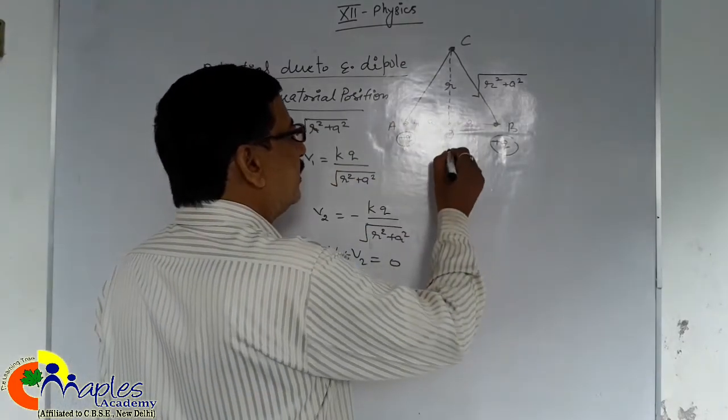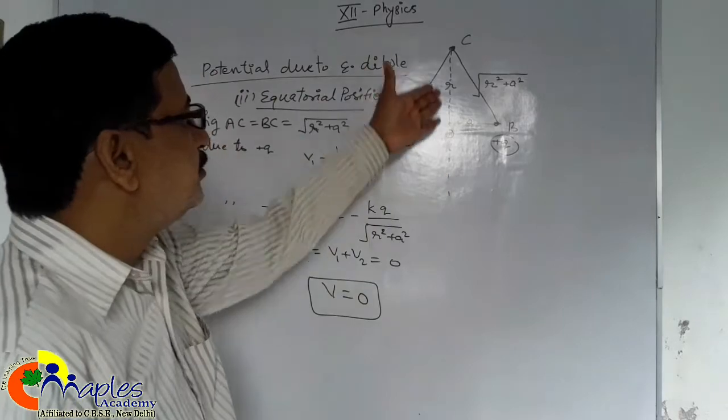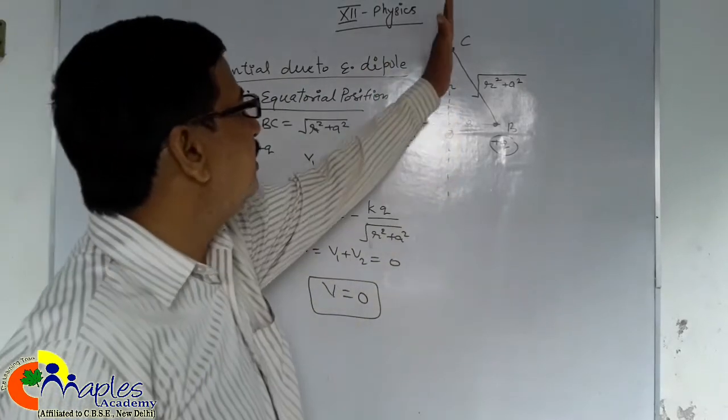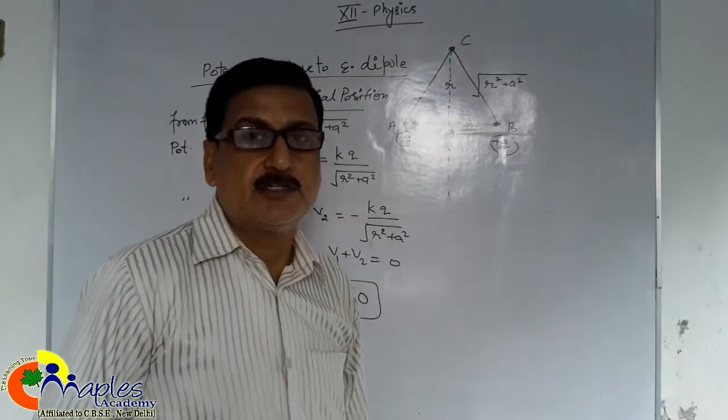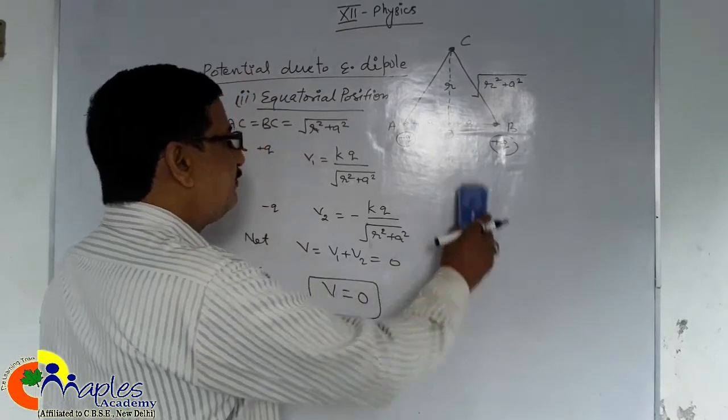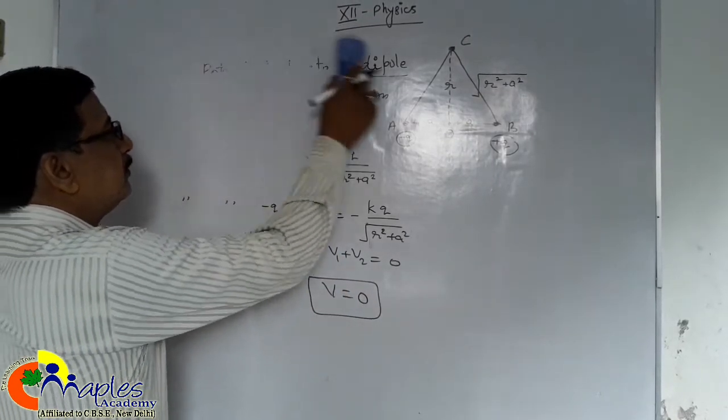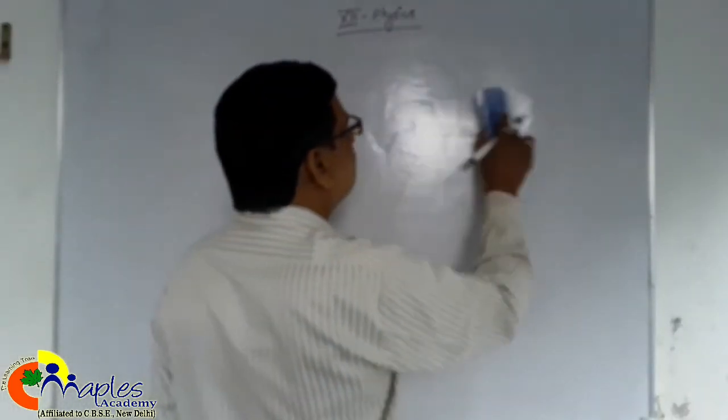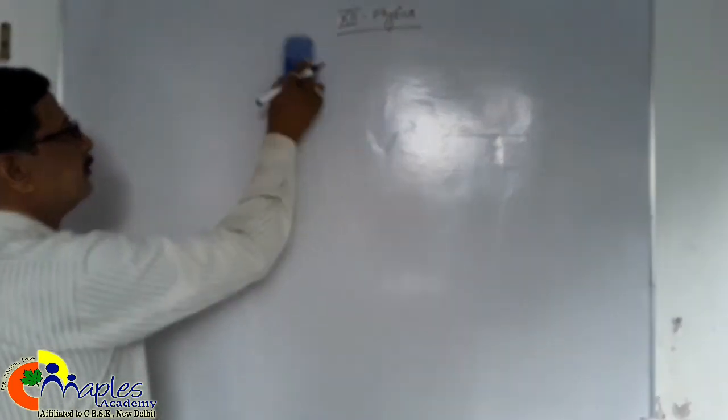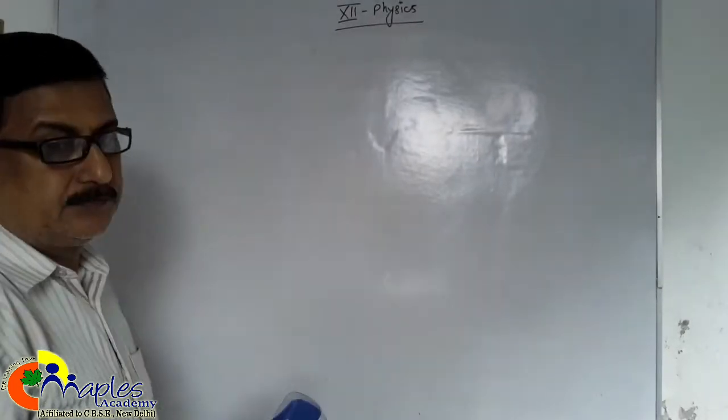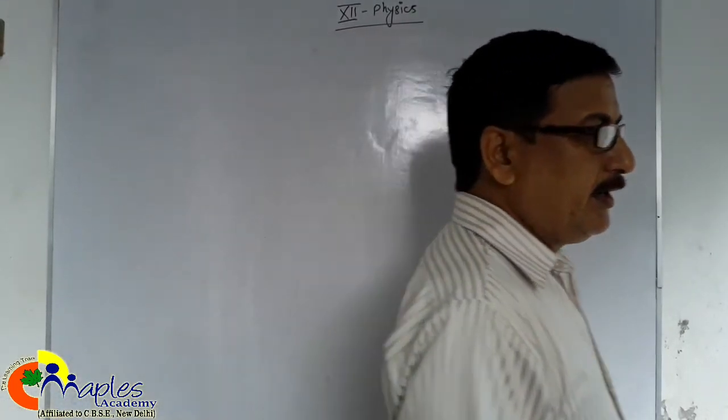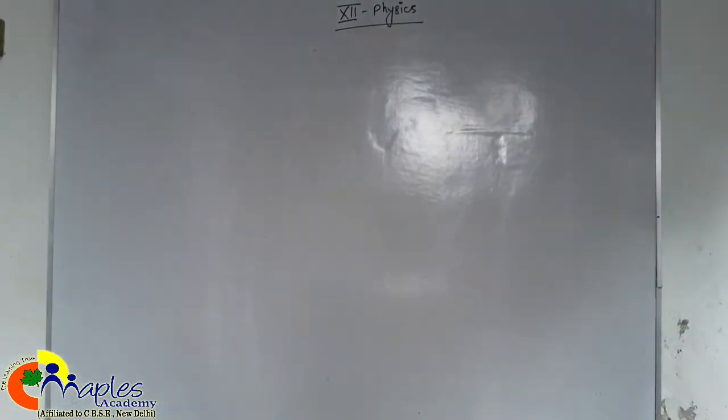Potential is zero. Potential is same so it becomes an equipotential surface. So in equatorial position potential is zero. In next video we will discuss about equipotential surface and potential energy of system of charges.